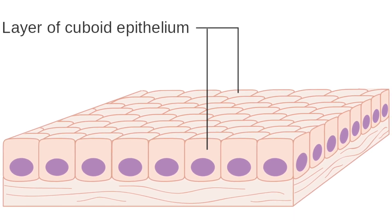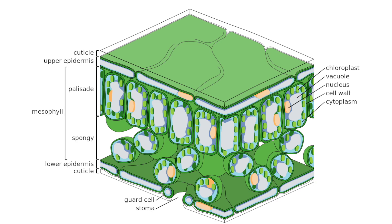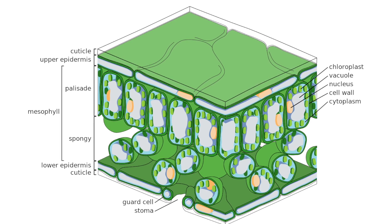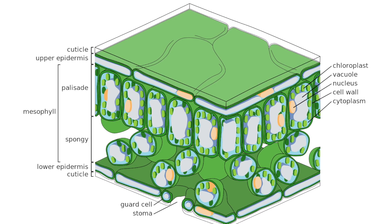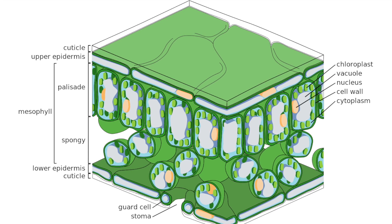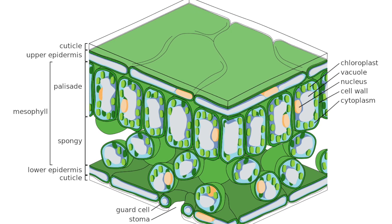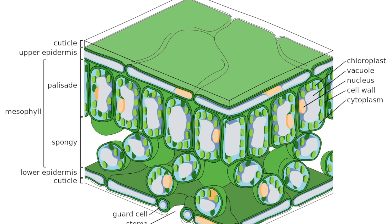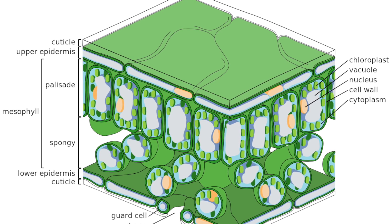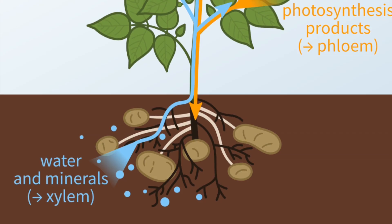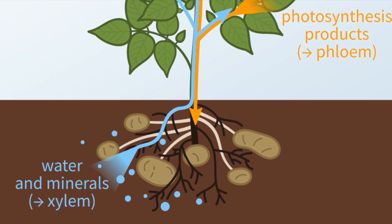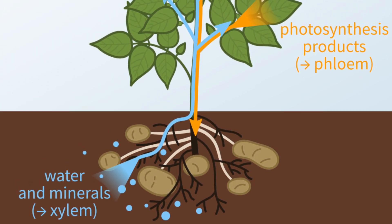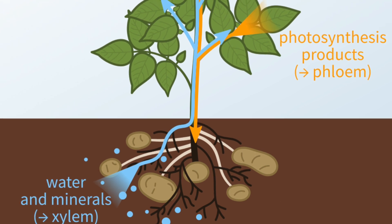In plants there are also tissues. Like the epithelial tissues, we have the epidermal tissues and these also cover the surfaces of the plants and protect them. Then we have the mesophyll tissues which contain a lot of chloroplasts so that they can do photosynthesis. Finally we have the xylem and the phloem which are the transport tissues in the plants, carrying water and ions to the leaves.